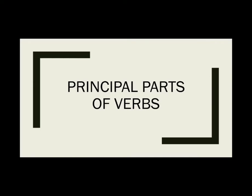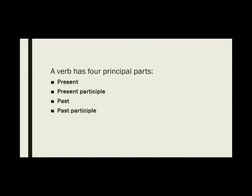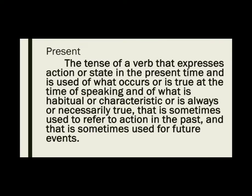The principal parts of verbs. A verb has four principal parts: present, present participle, past, and past participle. The present tense expresses action or state in the present time and is used for what occurs or is true at the time of speaking, for what is habitual or characteristic, or is always true — and is sometimes used to refer to action in the past or for future events.